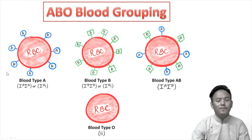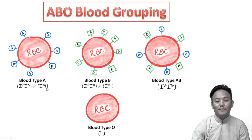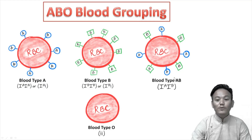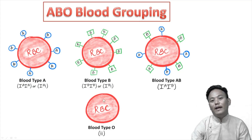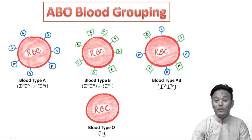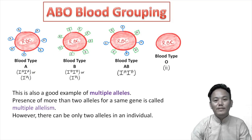If your blood group is A, your genotype could be either homozygous I^A I^A or heterozygous I^A i — two possibilities. The same applies to blood group B. But for blood group AB and blood group O, there is only one possible genotype each: AB must be I^A I^B, and O must be ii. So human ABO blood grouping is a good example of co-dominance.